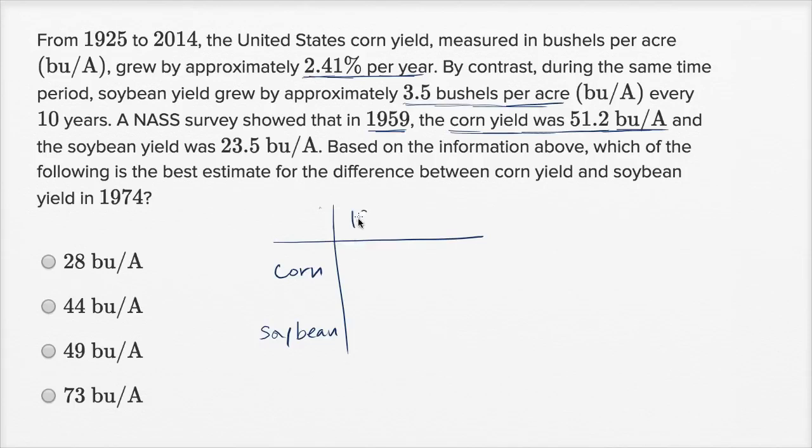So in 1959, the corn yield was - we're going to assume everything is in bushels per acre - 51.2 bushels per acre, and the soybean yield was 23.5 bushels per acre.